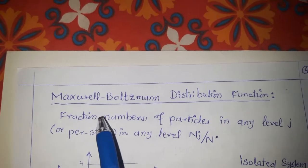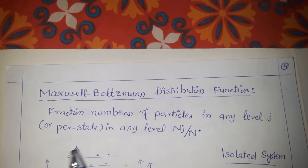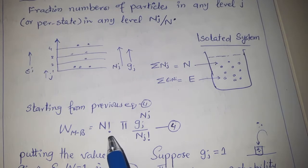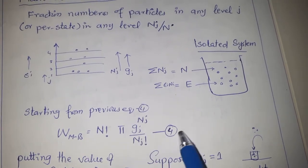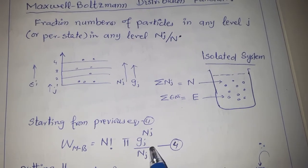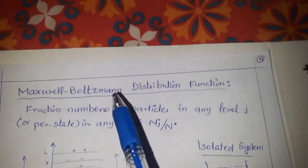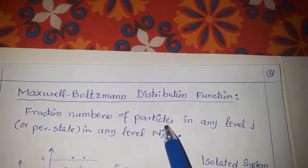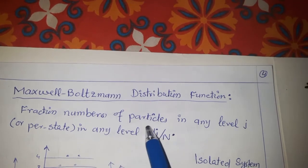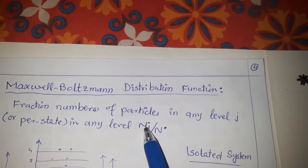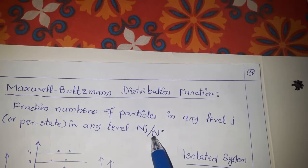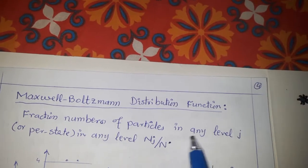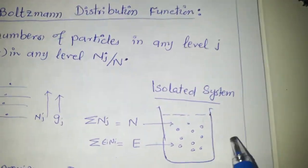Today I will talk about the Maxwell-Boltzmann distribution function. In our previous lecture we talked about the Maxwell-Boltzmann distribution of distinguishable particles and the total number of particles in different energy levels. We will start from that equation. The Maxwell-Boltzmann distribution function is the population ratio of particles in different energy levels as compared to the total number of particles — or we can call it the fractional number of particles in any energy level.